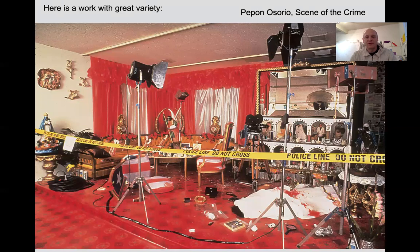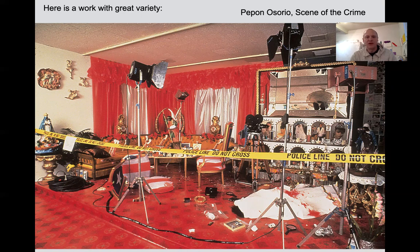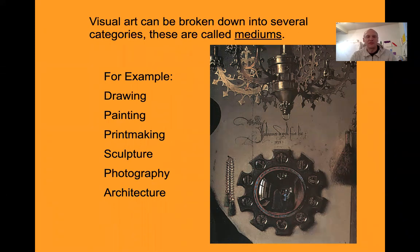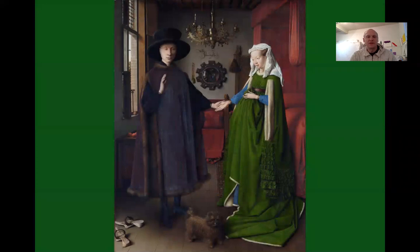Here's a great work with great variety happening. This is still a cohesive work of art — it's called an installation, which is sort of like expanded sculpture. You can see all these different varieties of shapes, but the whole work is unified by its message. We can break art down into several mediums: the more traditional ones are drawing, painting, printmaking, sculpture, photography, and architecture.